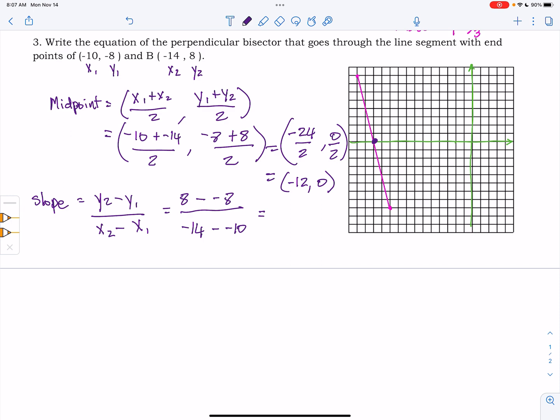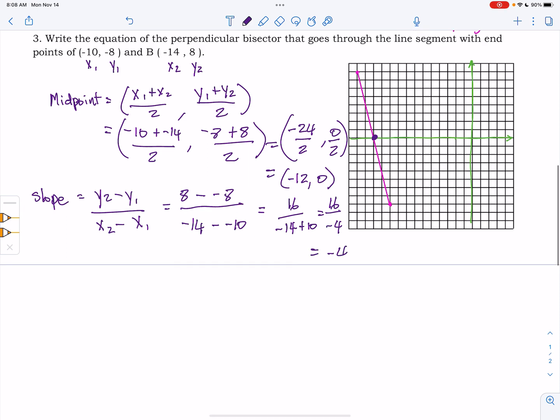And so simplifying that, we get 16 over negative 14 plus 10. So that gives us 16 over negative 4, ultimately giving us negative 4.